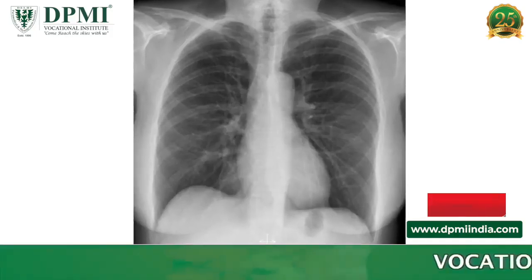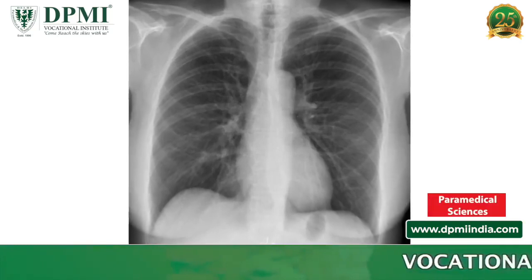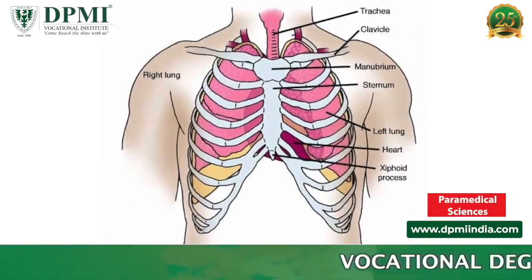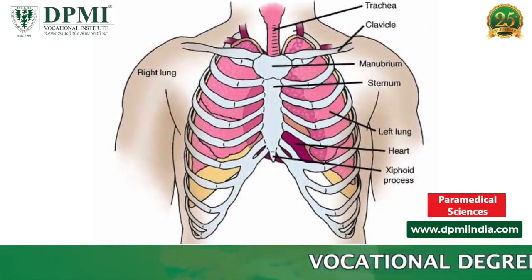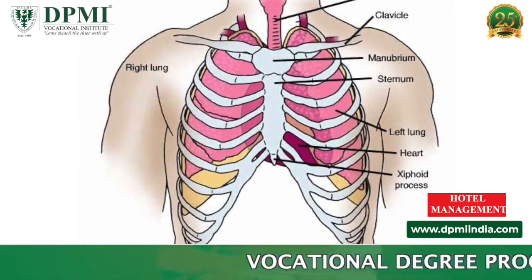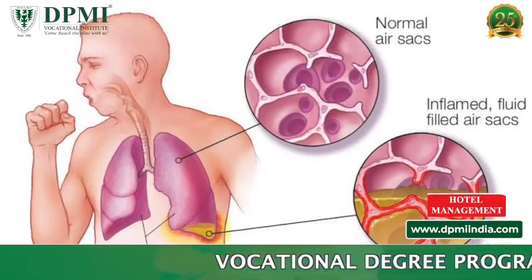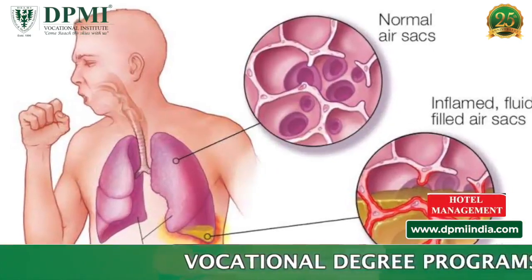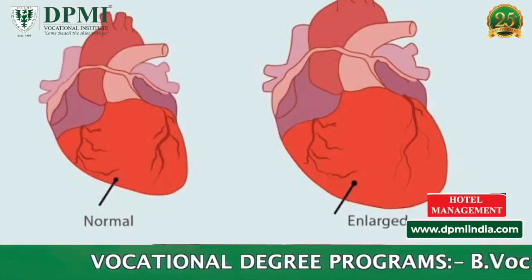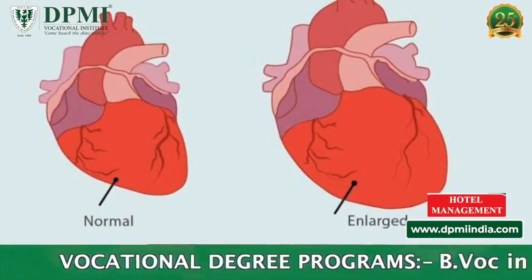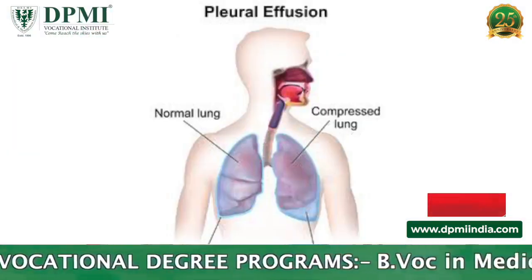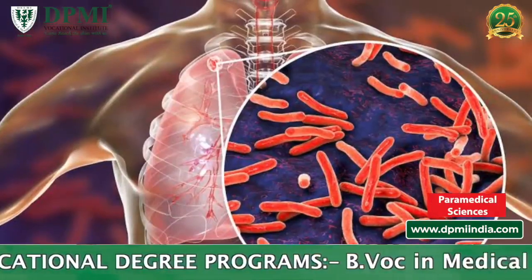Posterior anterior chest x-ray examines the lungs, bony thoracic cavity, mediastinum, and great blood vessels. Indications for this x-ray include pneumonia, pneumothorax, cardiomegaly, hemoptysis, pleural effusion, and tuberculosis.